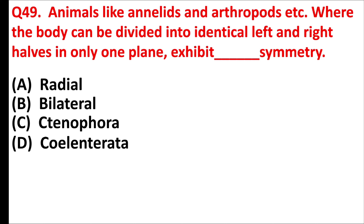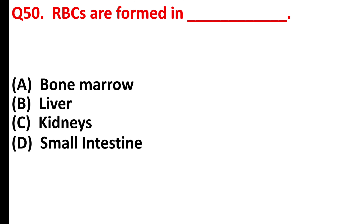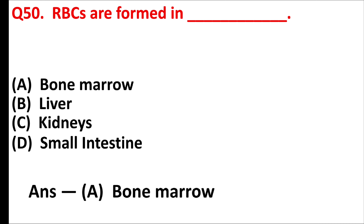Animals like Annelids and Arthropods, where the body can be divided into identical left and right halves in only one plane, exhibit — answer is option B: bilateral symmetry. RBCs are found in — answer is option A: bone marrow.